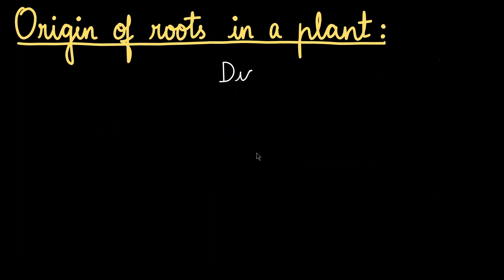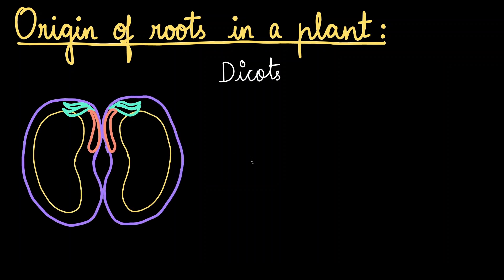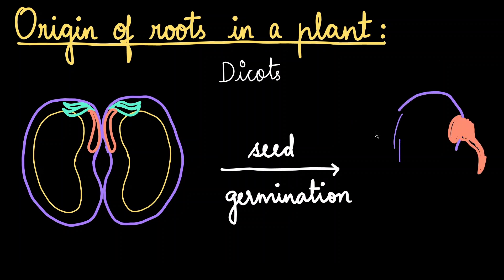The similar thing happens for a dicot seed as well. This is what a dicot seed looks like. When the conditions are right, the seed germinates to give out this structure. This is the radicle for a dicot seed after germination, and the radicle is going to grow into a root.